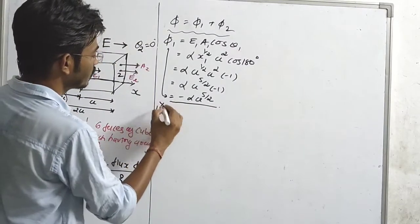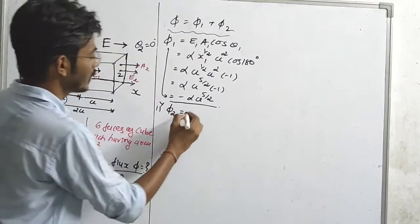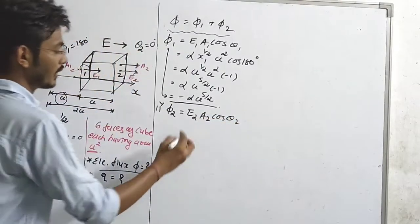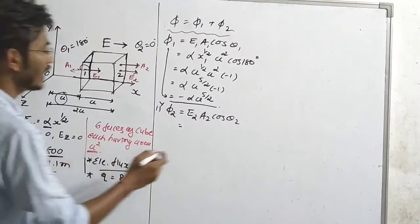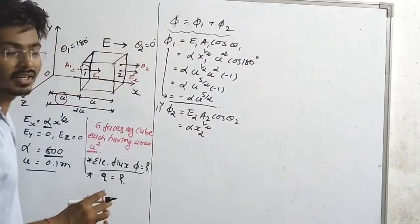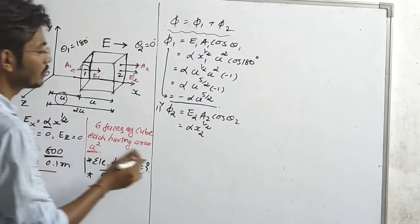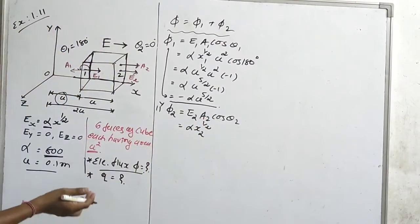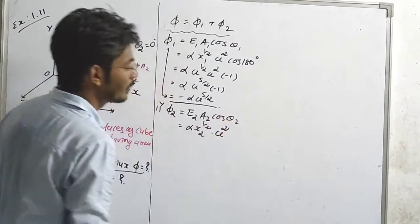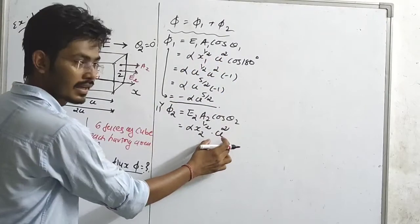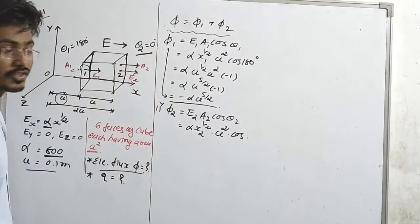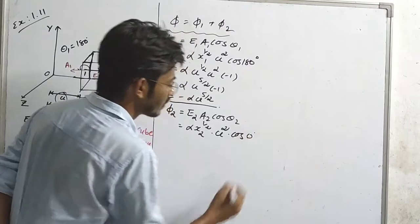Similarly, we have to find out phi 2. Phi 2 equals E2 times A2 times cos theta 2. The general equation for E2 is alpha times x2 raised to 1/2. Area 2 of the cube face is also a squared. Theta 2 is zero degrees since E2 and A2 are parallel, so cos zero equals 1. For face 2, x2 is the distance from the origin to the second face.